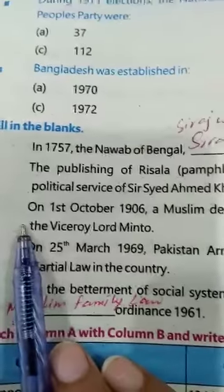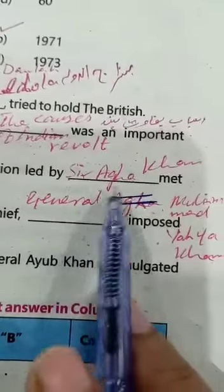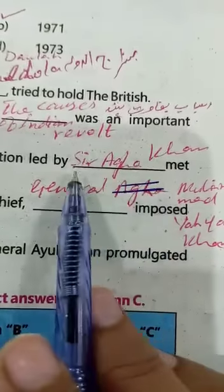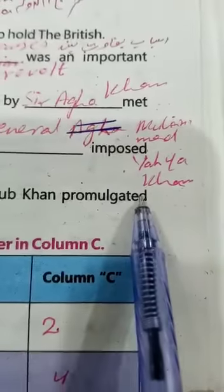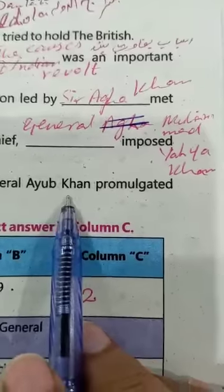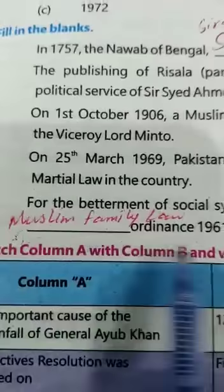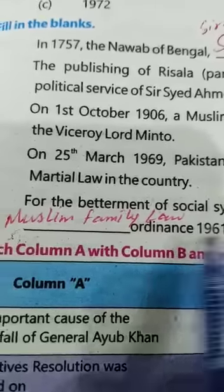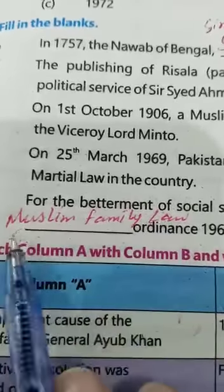Number three: On 1st October 1906, a Muslim delegation led by Agha Khan met the Viceroy Lord Minto — fill in the blank with Agha Khan. Number four: On 25th March 1969, Pakistan Army Chief General Muhammad Yahya Khan imposed Martial Law in the country — fill in the blank with General Muhammad Yahya Khan. Number five: General Ayub Khan promulgated the Muslim Family Law Ordinance 1961 — fill in the blank with Muslim Family Law.